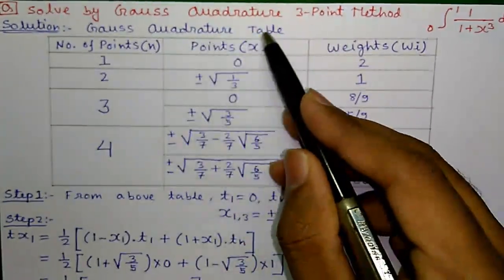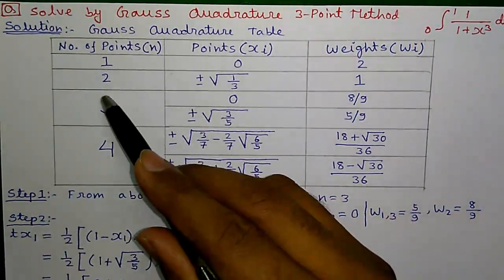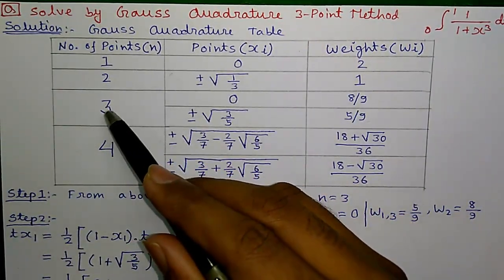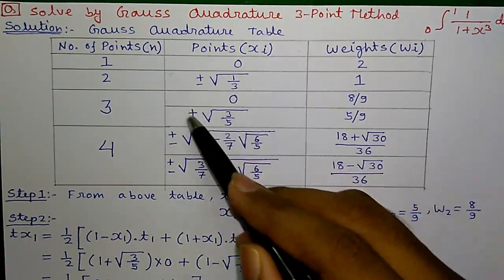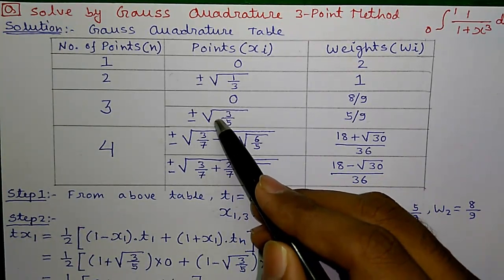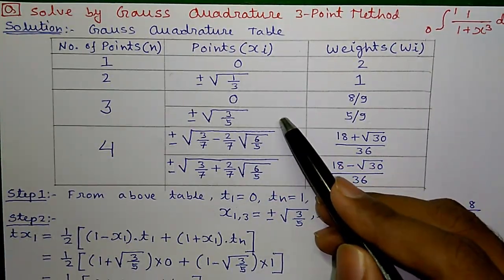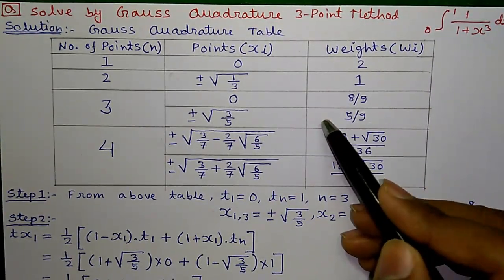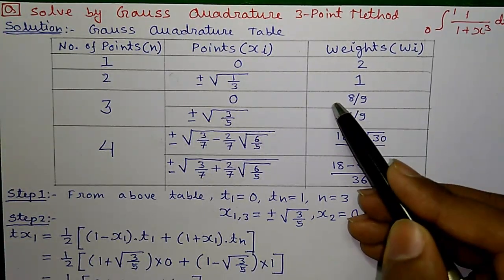First step is to write down Gauss Quadrature table which is this table. In our case, 3 point or number of points equals to 3. So, this part is applicable. Here, this is the value of x1 and x3 and this is the value of x2 and this is the corresponding value of w1 and w3 and this is the corresponding value of w2.